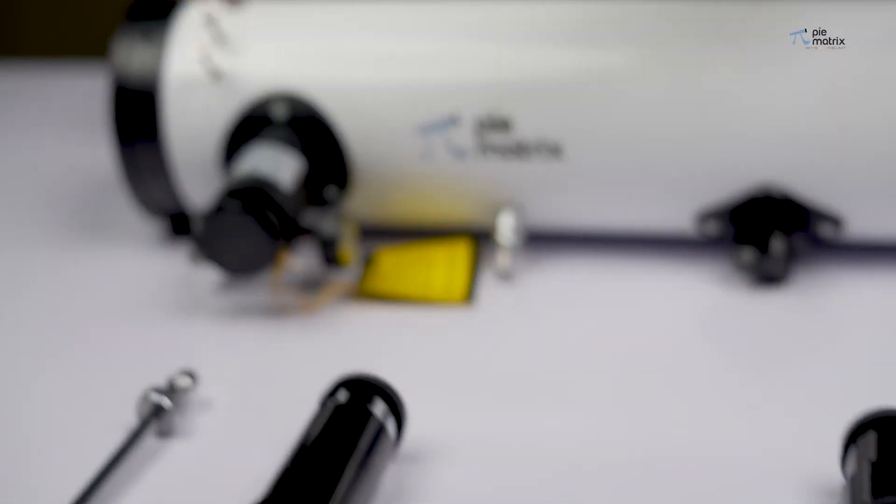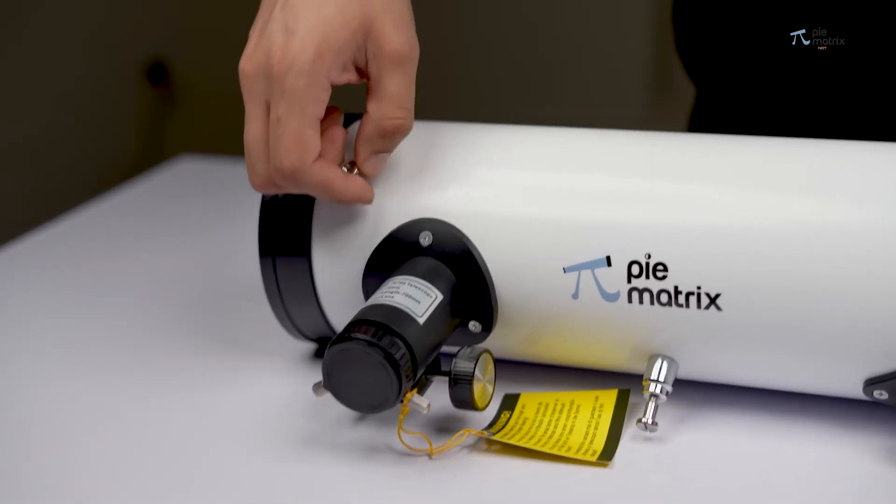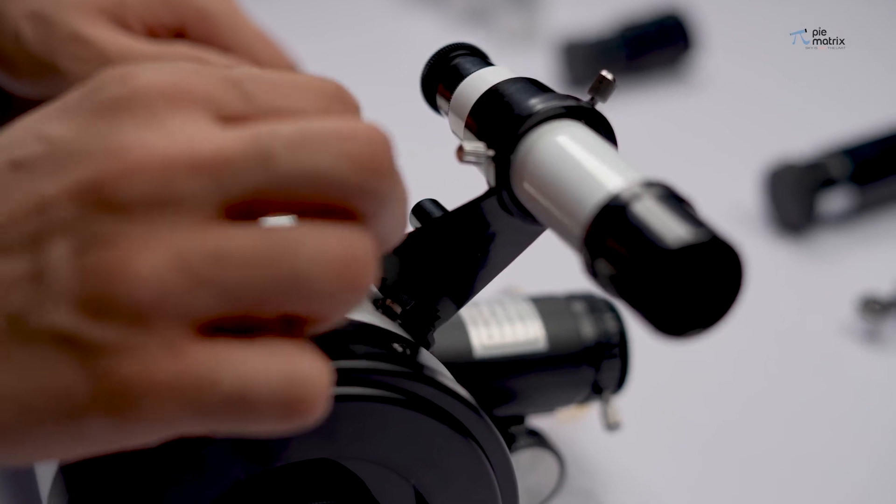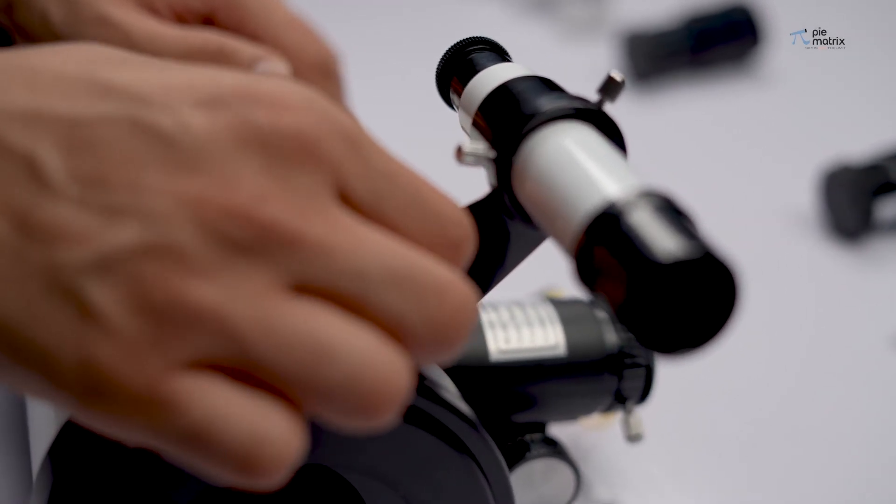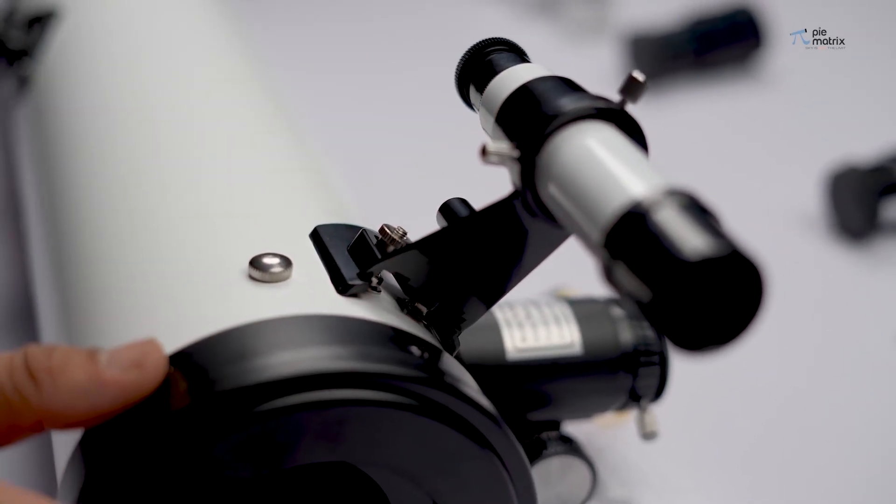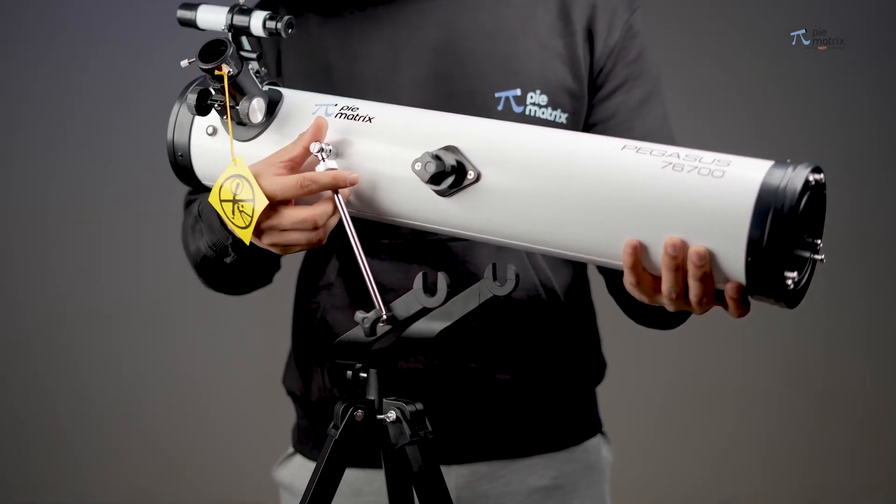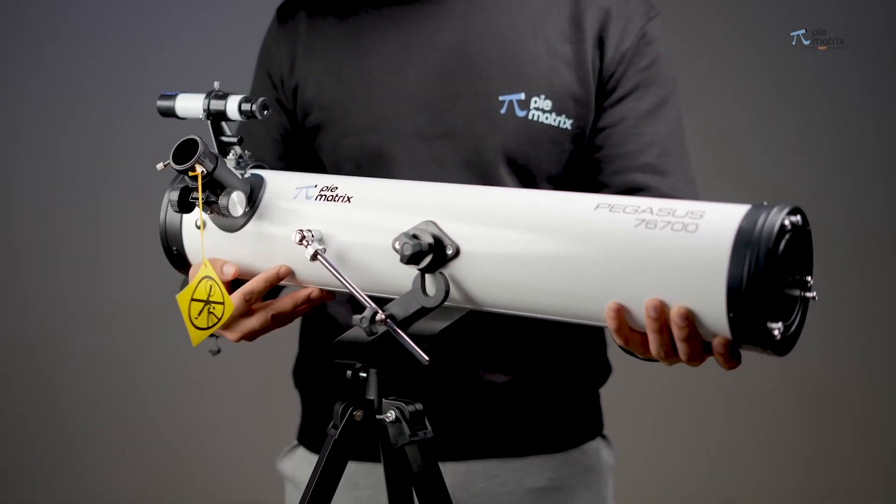The finder scope goes inside the bracket mounted on the telescope tube. Finally install the slow motion knob as shown in the video and pass it through the altitude knob on the fork mount.